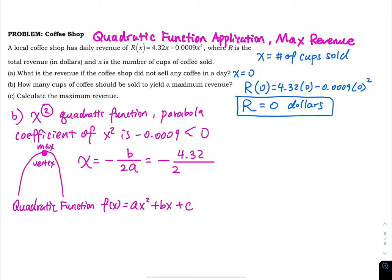And then 2 times a, where a is the leading coefficient, negative 0.0009. When you do the arithmetic, you have 2,400 cups.